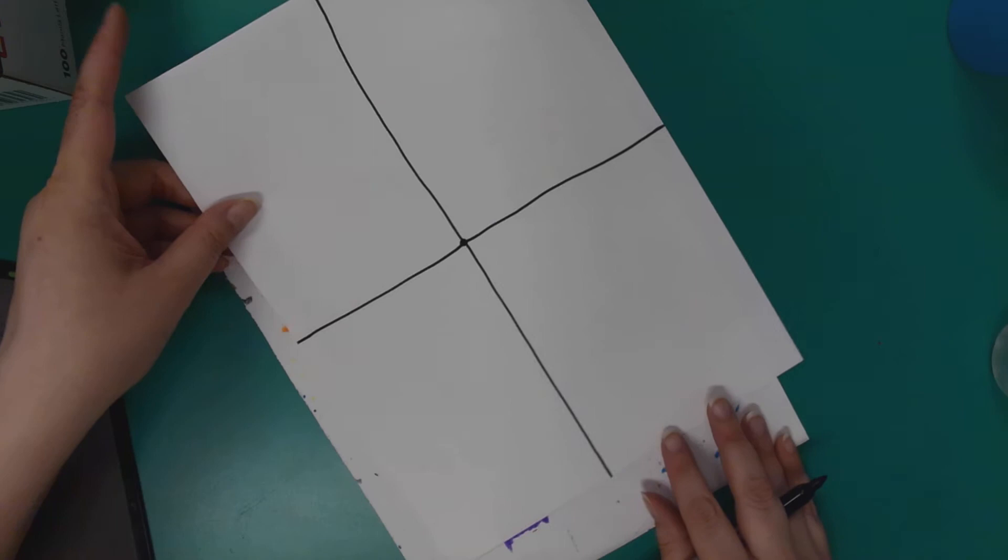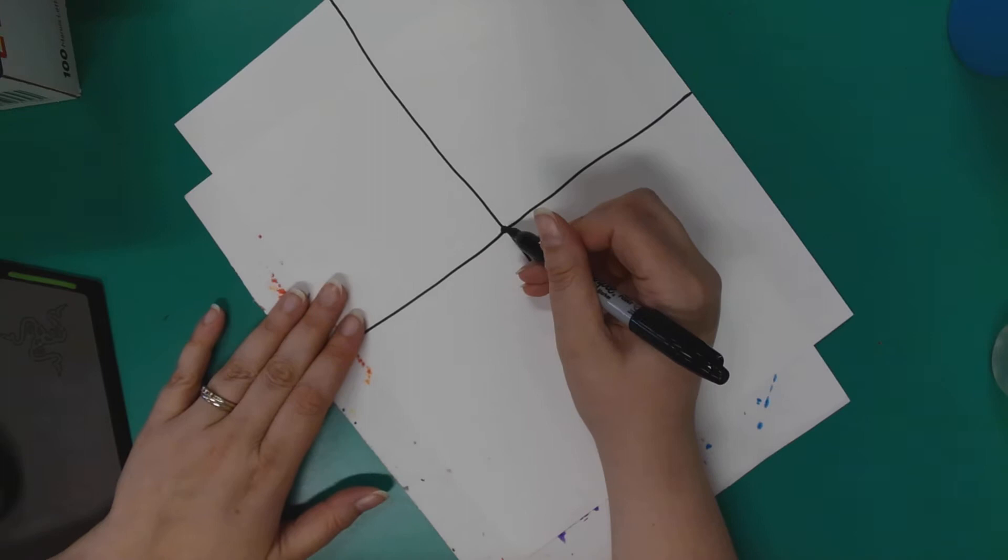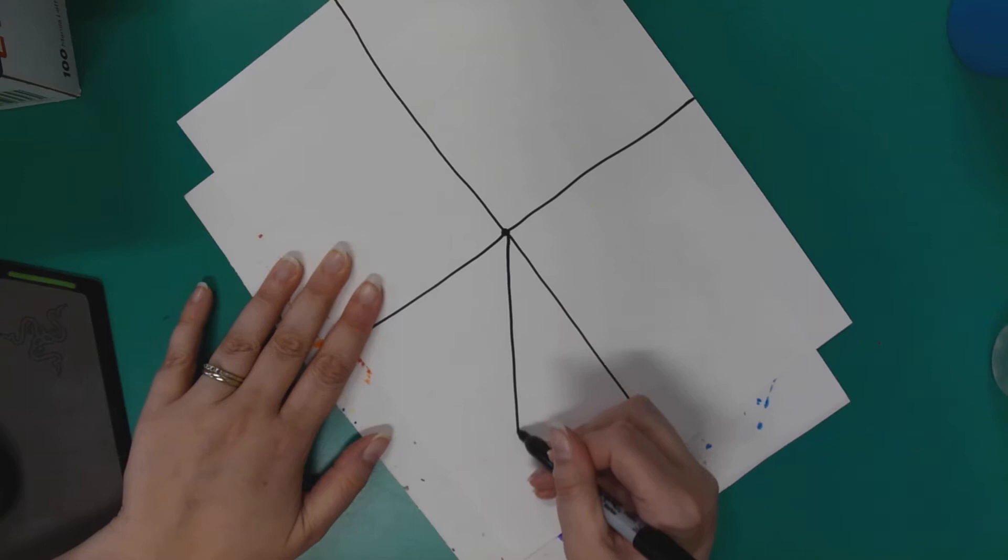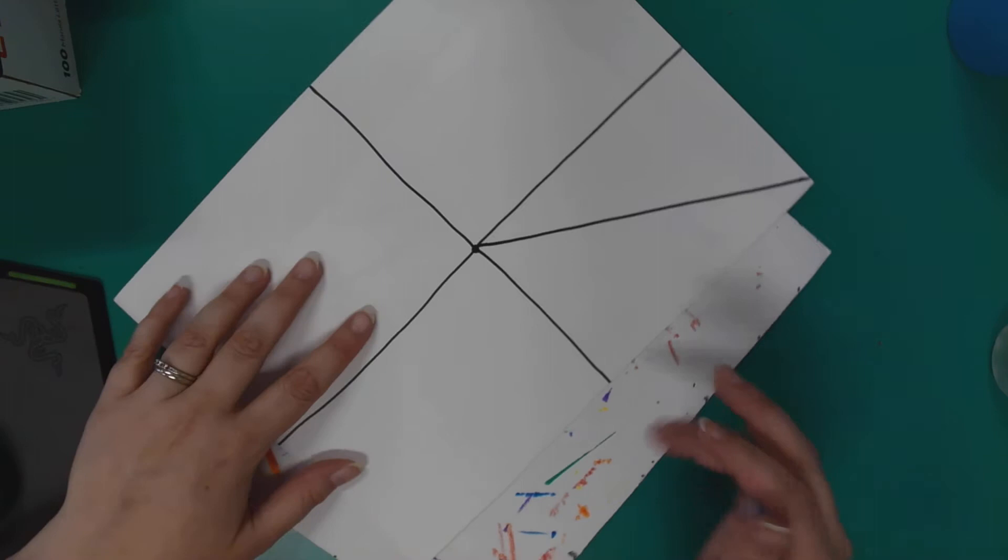Now we're going to turn our paper to the side and make sure the edge is on the messy sheet. We're going to put our marker right in the middle and draw to the corner. Turn your paper, let's do it again - draw to the corner, and again to the corner here, and one more time to the corner. Not bad.